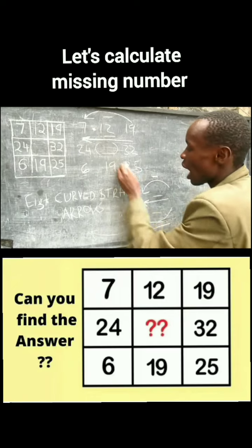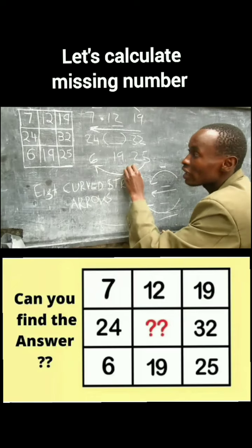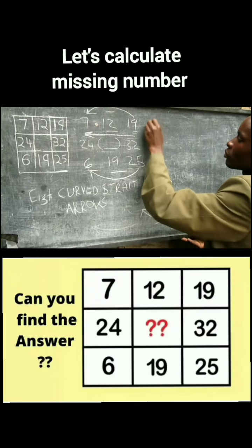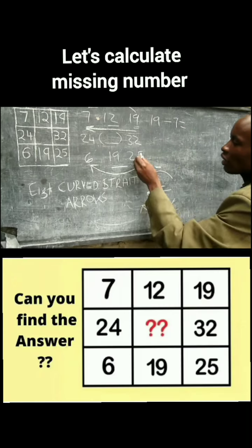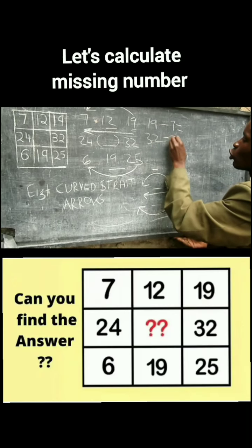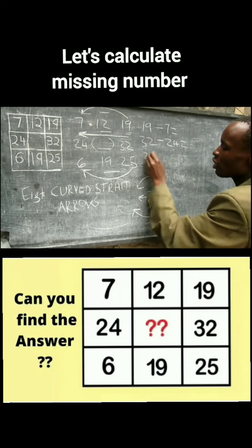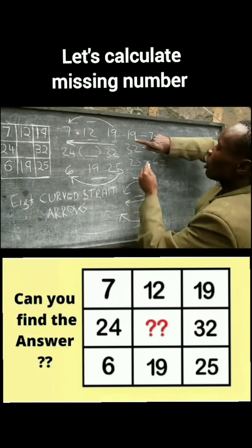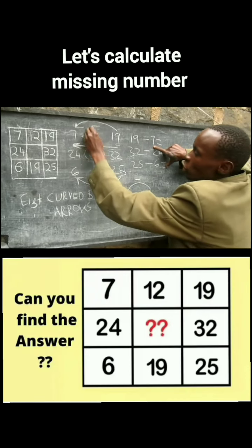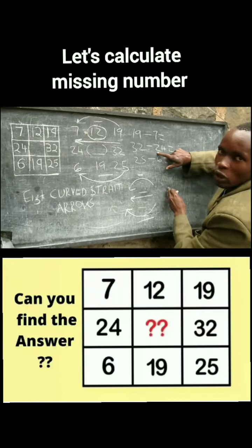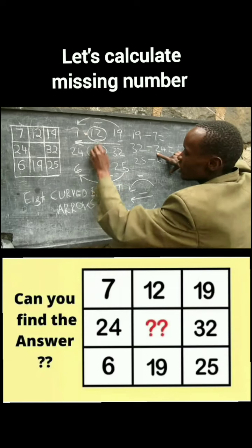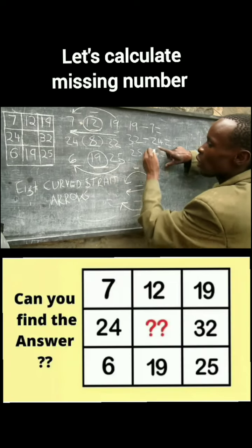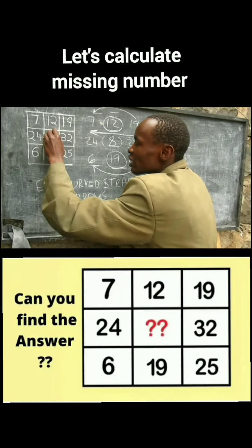Please pay attention — simple mathematics. Now: 19 minus 7 equals 12, 32 minus 24 equals 8, and 25 minus 6 equals 19. It means the missing number is 8.